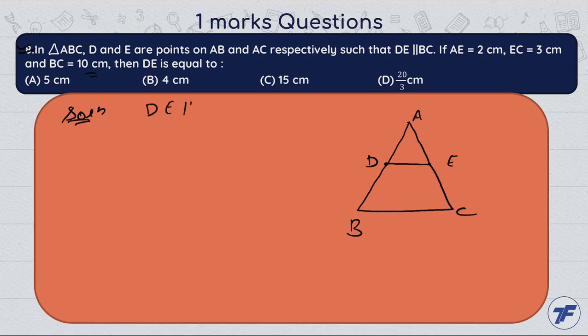Given that DE is parallel to BC, which means here we have angle ADE equal to angle ABC. Why? Because we have AB as a transversal for DE and BC, because these two are parallel, corresponding angles.